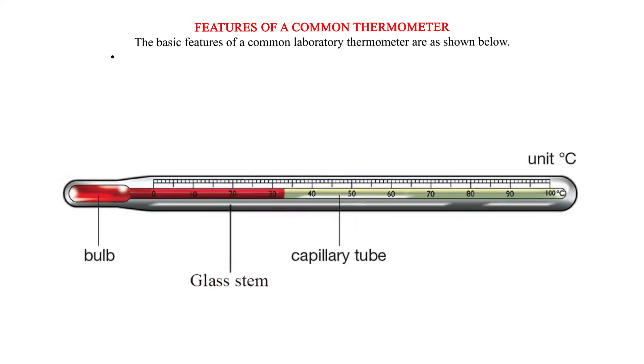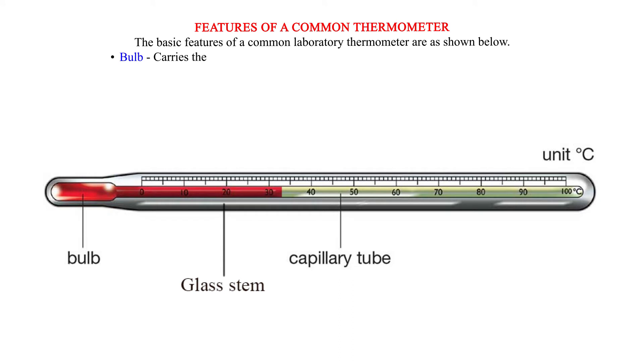Features of a common thermometer. The basic features of a common laboratory thermometer are as shown below. Bulb: Carries the liquid in the thermometer. It has a thin glass wall for effective heat transmission between the liquid and body whose temperature is taken.